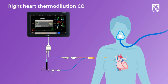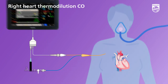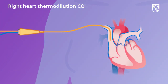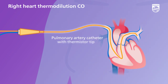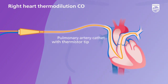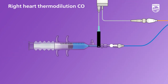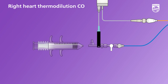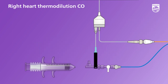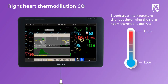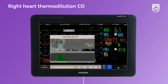One method, right heart thermodilution CO, is an aperiodic measurement utilizing a pulmonary artery catheter with a thermistor at the tip. The procedure involves injecting a known volume of fluid at a known temperature that enters the right heart circulation at a known distance from the thermistor.